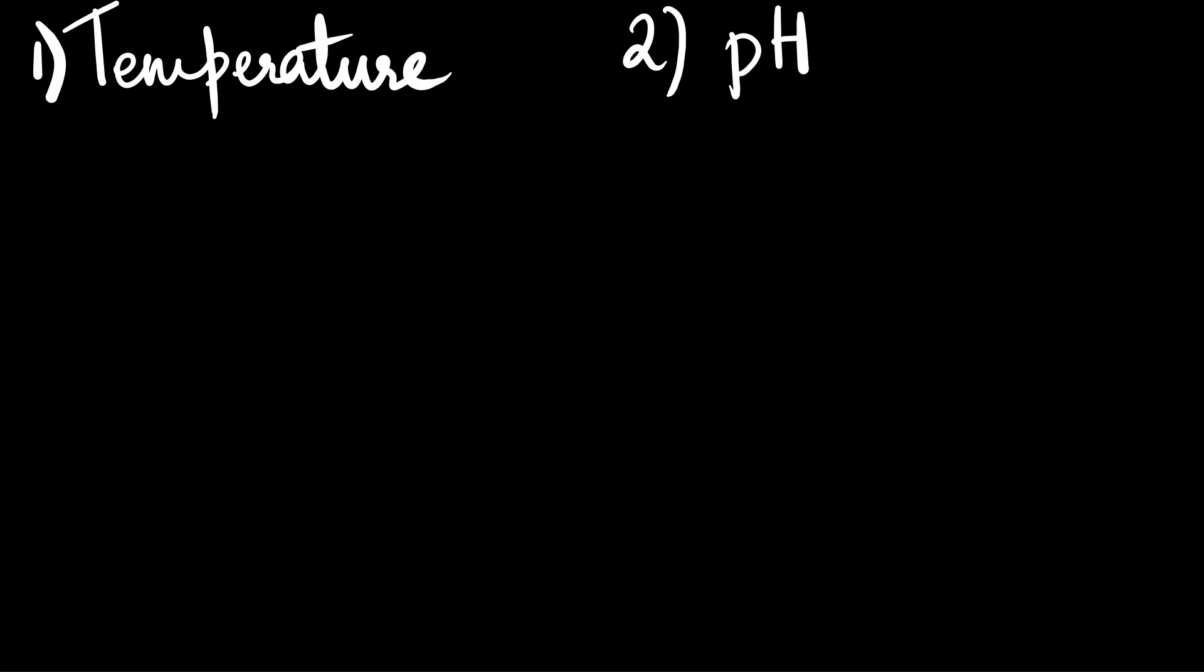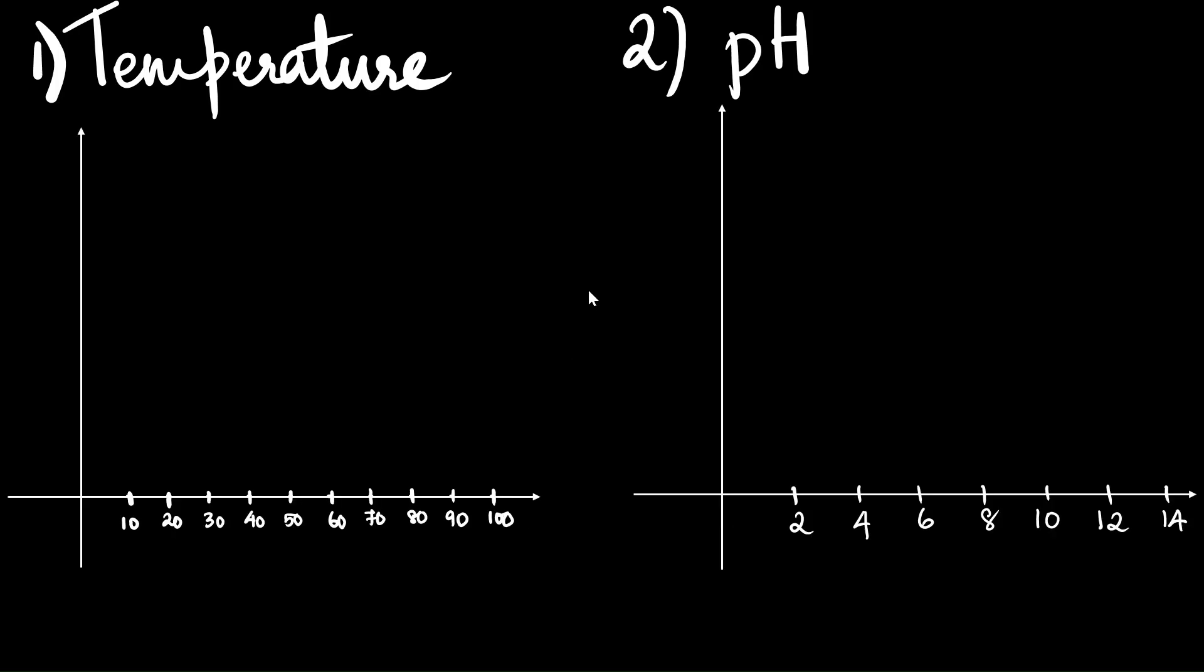If we were to visualize the effect of temperature and pressure through a graph, this is how it would look like. I would have the enzyme activity on the y-axis and the physical factors on the x-axis. In one case it's temperature and in the other case it's pH.